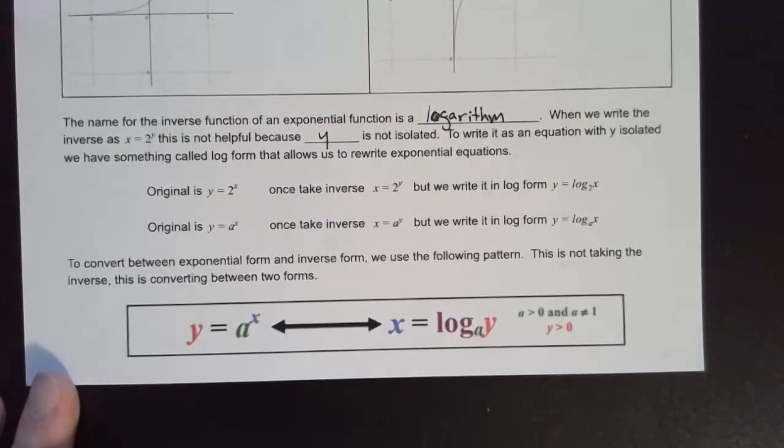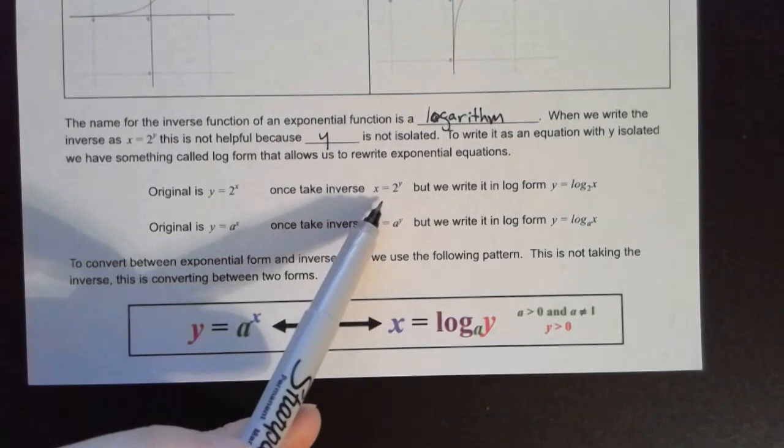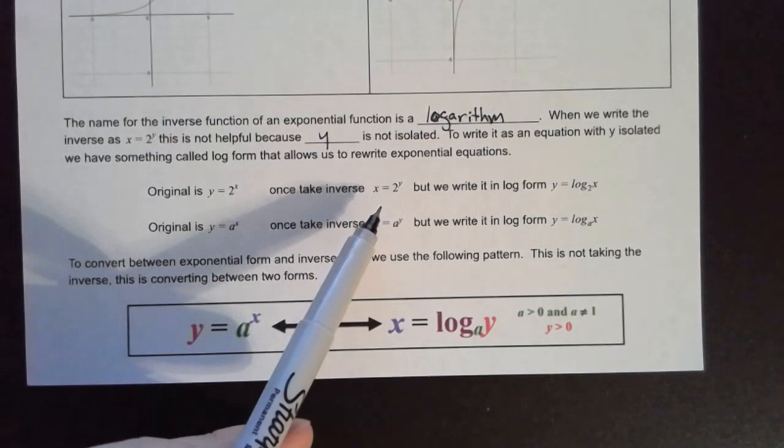That way it is a proper function. Let's take a look at what that log form looks like. We started with Y equals 2 to the X power. The first thing we do to find the inverse is switch our Y and our X, giving us X equals 2 to the Y power. Again, we don't know any algebraic way to solve this for Y, so we want to use log form.